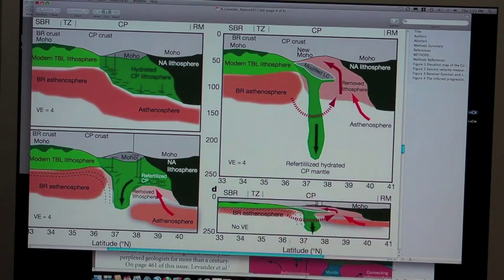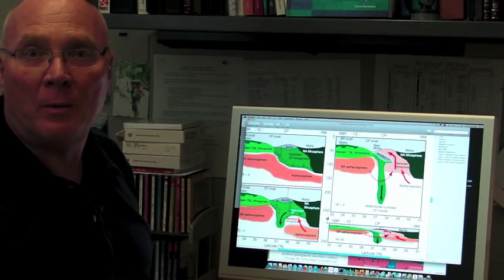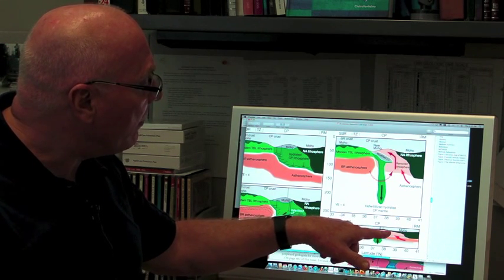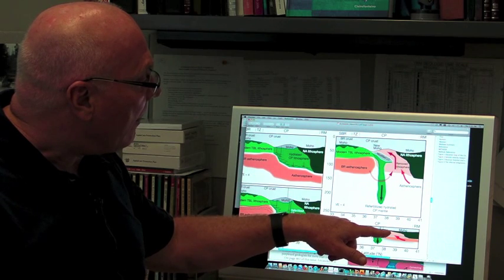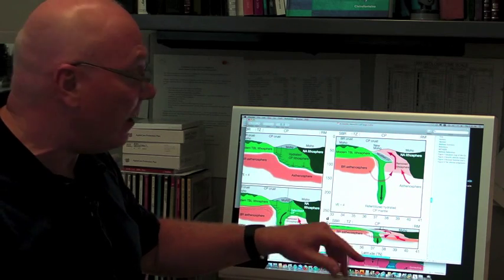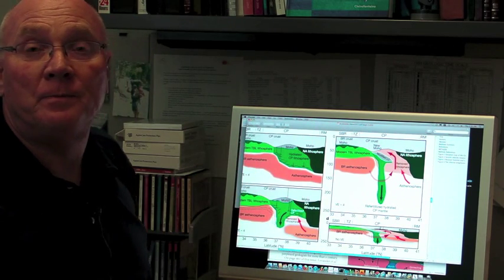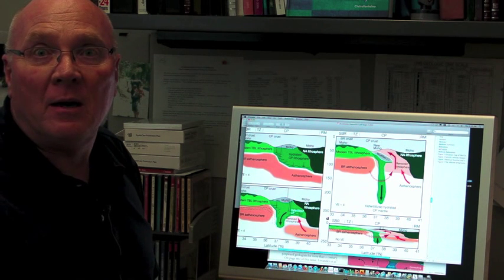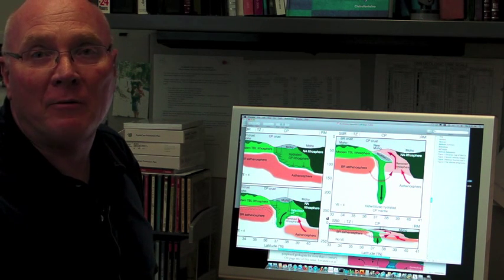And this blob will eventually sink down hundreds of kilometers. But the net effect is it warms up what's above it, and it can produce uplift or it can produce subsidence. And in this case, it's produced uplift. And it just depends on combinations of densities and a variety of factors.